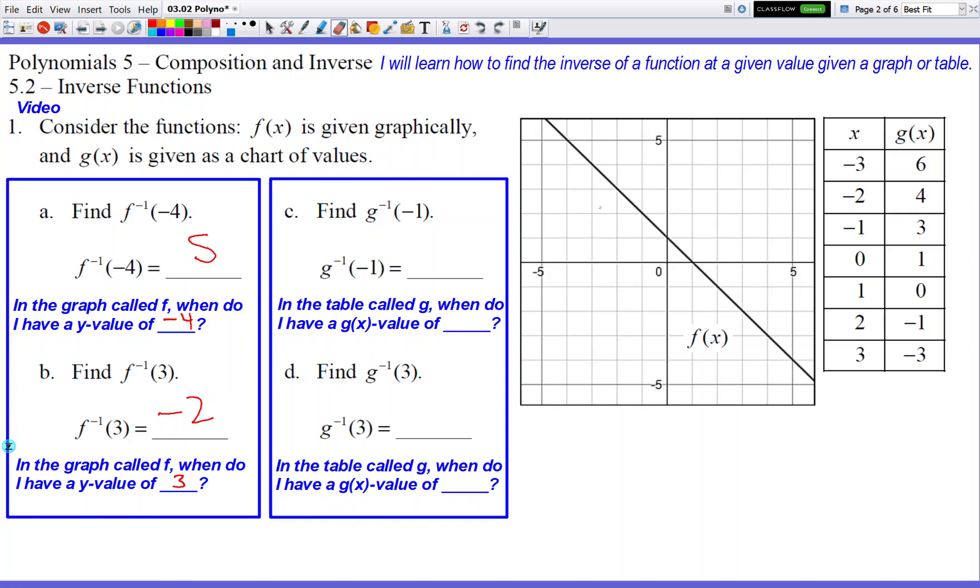All right, let's go to the next two problems, c and d, which are not going to deal with this graph anymore. They're going to deal with the table. So in the table called g, when do I have a g of x value of negative 1? So let's look for the g of x value of negative 1 and see who it corresponds to. So here's my g of x value of negative 1. So what x value brought it up? A 2 did.